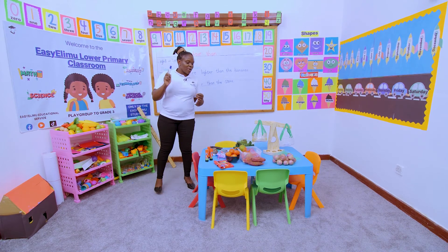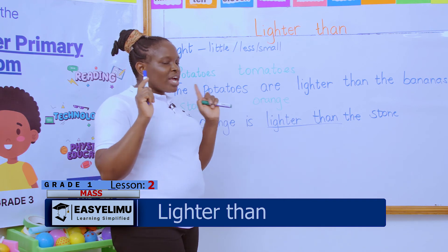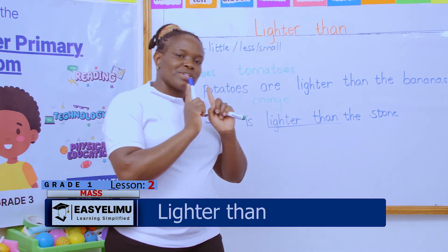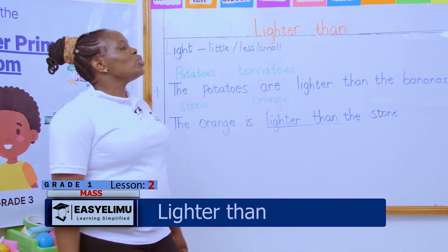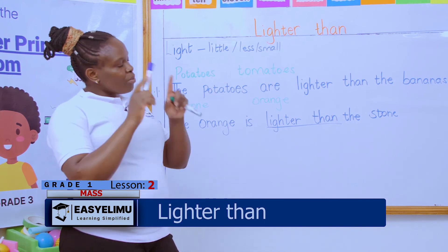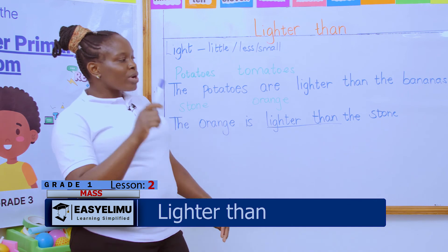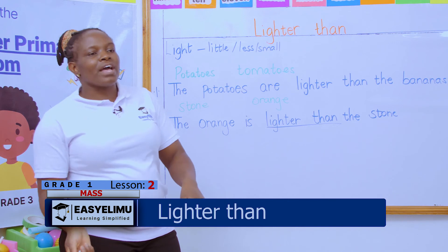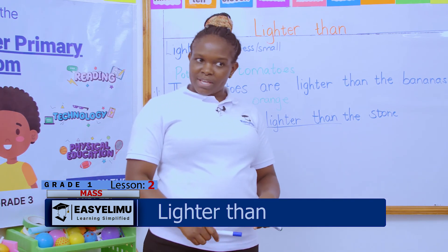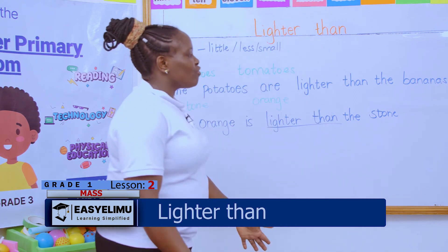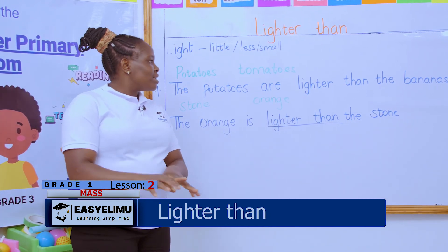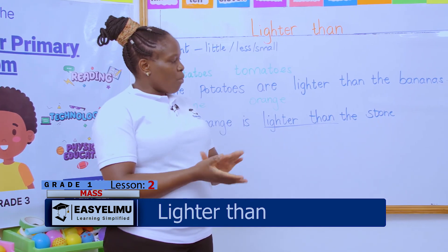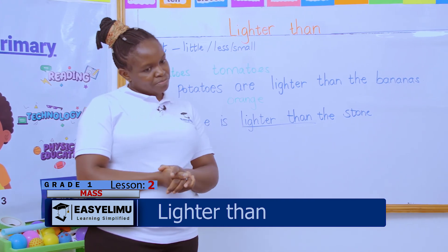Any questions? When you go home, I want you to try and carry the sofa set and compare its weight with the table. Compare the dining table and the dining chairs and tell me which one you can carry — the one you can carry is the lighter one. Also look at mommy's shoes and daddy's shoes — which are heavy and which are light? Try the bucket of water, the cooking fat tin, the salt tin, and the sugar tin, and compare their weight.